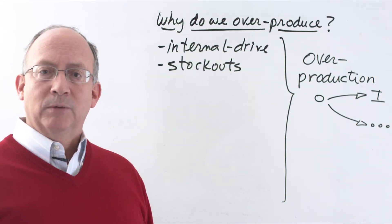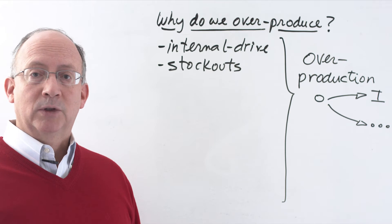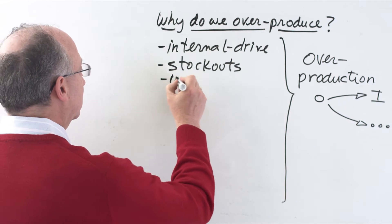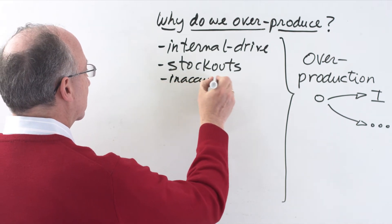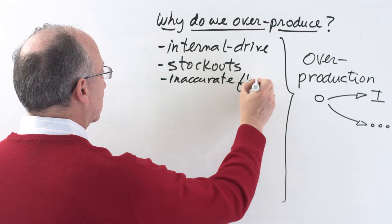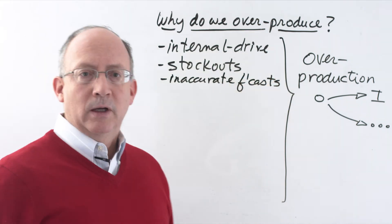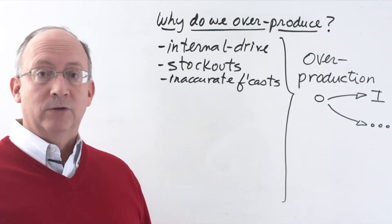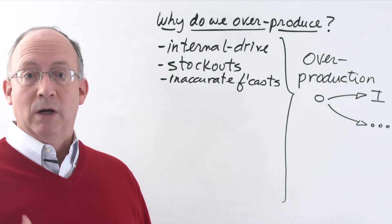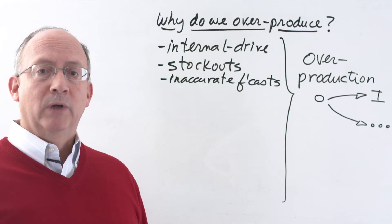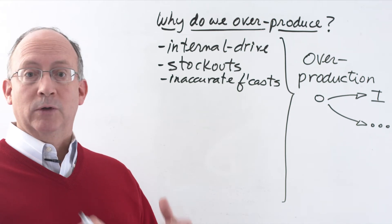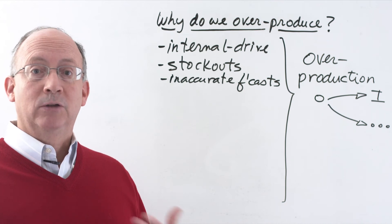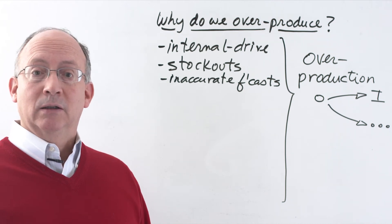Another reason why teams may overproduce is to protect themselves from the consequences of having inaccurate forecasts. This may be an indication that you have poor knowledge of your markets, poor information about how they go up and down, or maybe poor relationships with your customers, which leads the customer to self-protect against uncertainty as to your ability to deliver. They self-protect by overbuying.